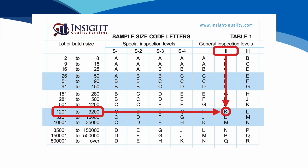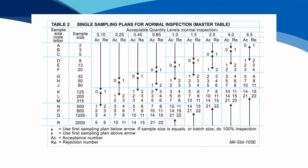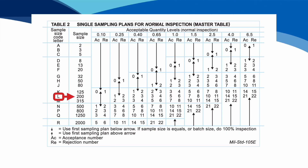Going to table two, we can see that K gives us a sample size of 125 units — that's how many USB hubs the inspector is going to pull out of your cartons to check. Now, if we had chosen general one, that would give us a code letter of H and a sample size of only 50 units. Whereas if we had chosen general three, that would give us a code letter of L and a sample size of 200 USB hubs. You can see how choosing a different general AQL level impacts the size of your inspection sample.